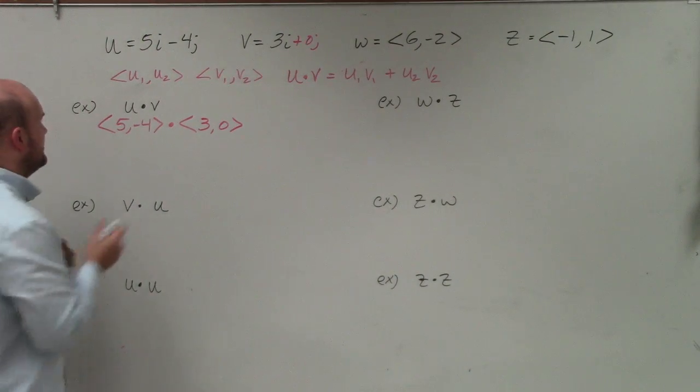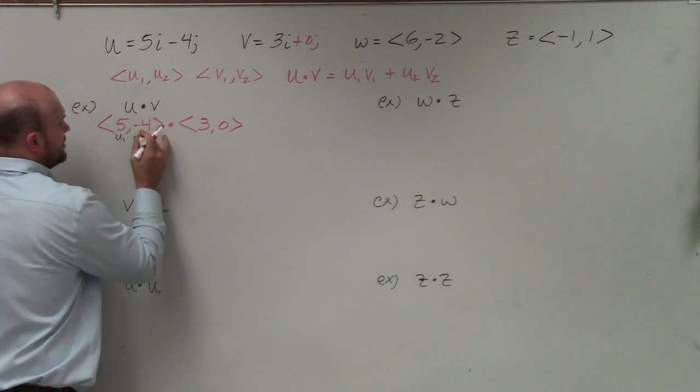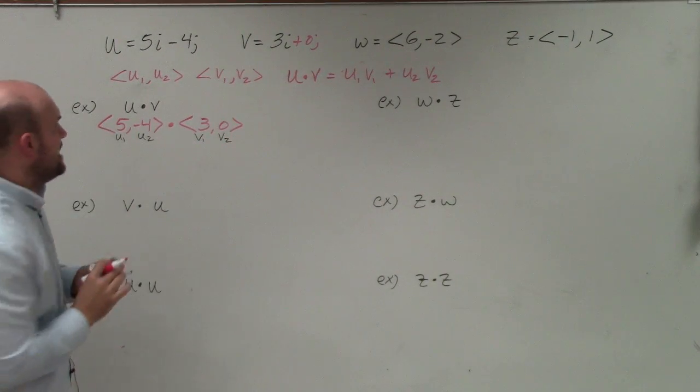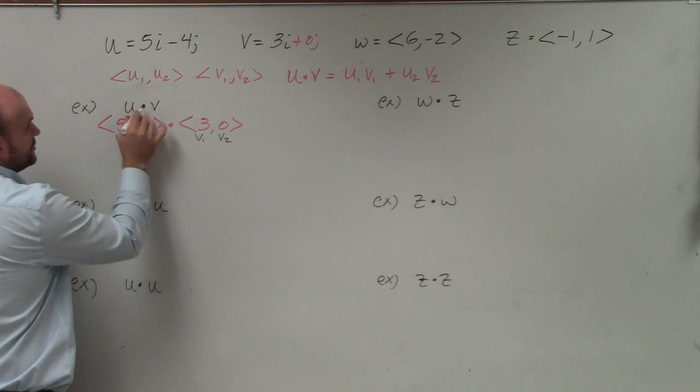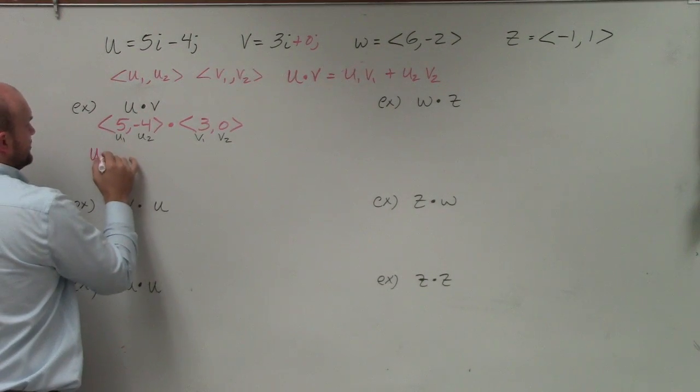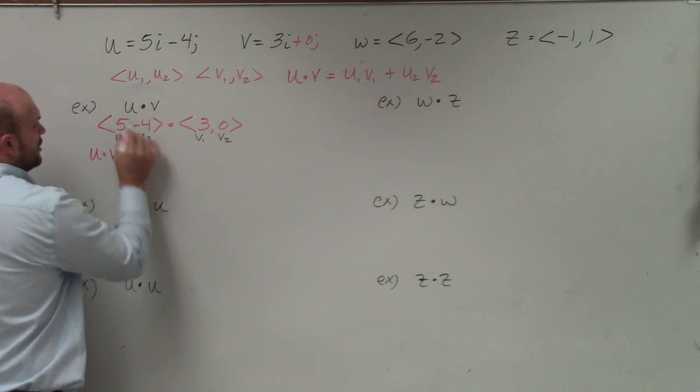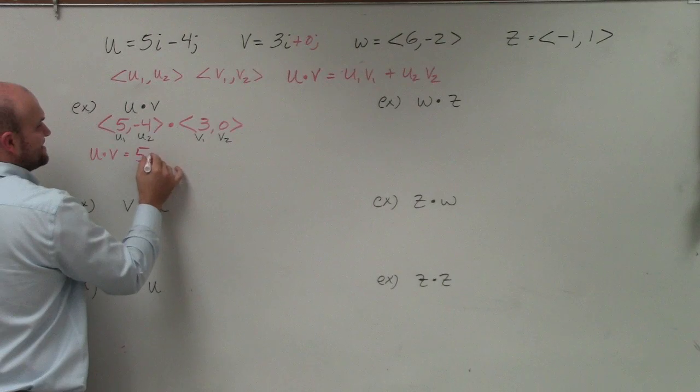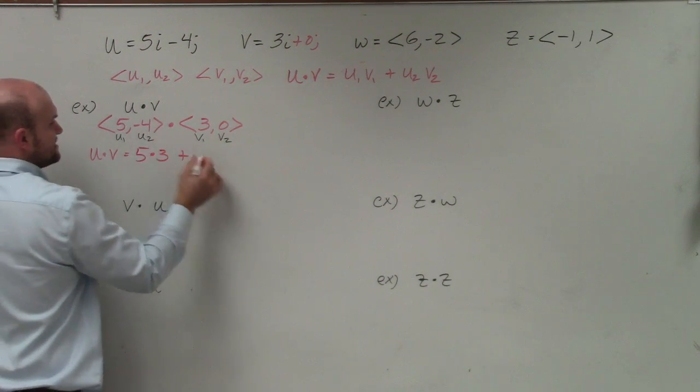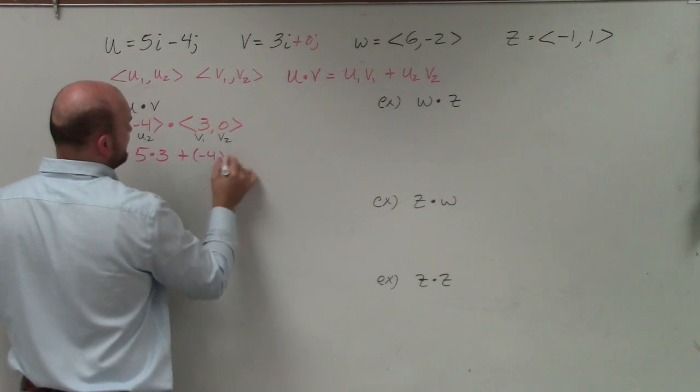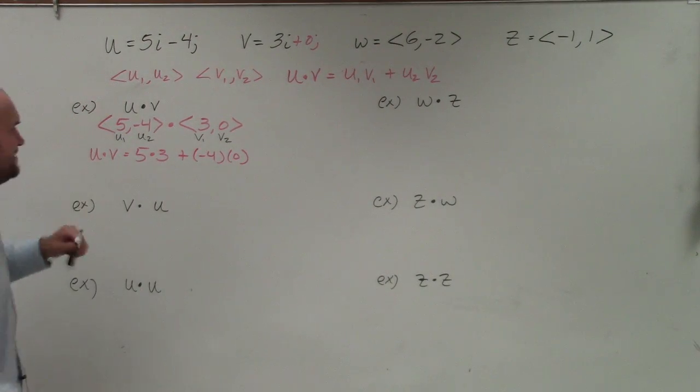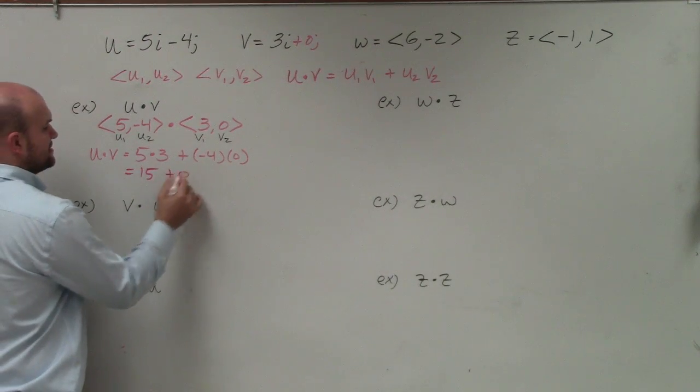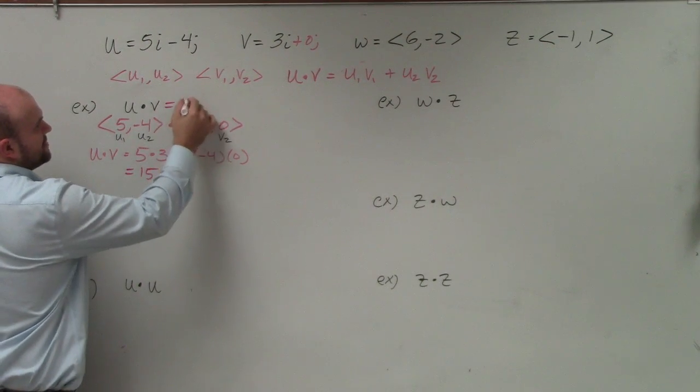Now I can label them as u1, u2, v1, and v2. Now by applying the dot product of u dot v, I can do the dot product here, is simply going to be u1, I keep on wanting to do a vector but it's not a vector, 5 times 3 plus negative 4 times 0. Well, 5 times 3 is obviously going to be 15. And negative 4 times 0 is obviously 0. So therefore your final answer is equal to 15.